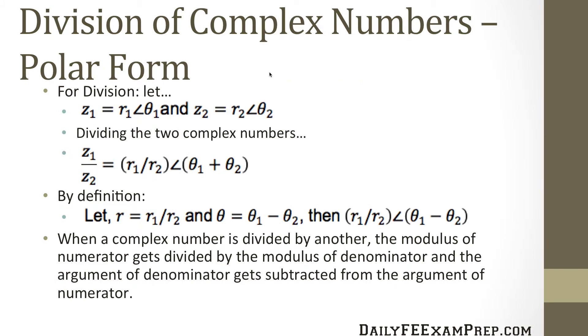Division of complex numbers in polar form: Let z1 equal r1 angle theta1 and z2 equal r2 angle theta2. Dividing the two complex numbers, we get z1 divided by z2 equals r1 divided by r2 angle theta1 minus theta2. Note there's a typo on screen, it should be minus theta1 minus theta2. By definition, when dividing, r equals r1 divided by r2 and theta equals theta1 minus theta2.